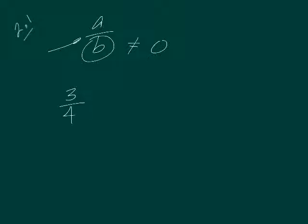And the bottom number, b, cannot be equal to 0. And we'll go into some reasons why that's true later on. But right now, just suffice it to say that the bottom number cannot be 0. And that's all a fraction is.